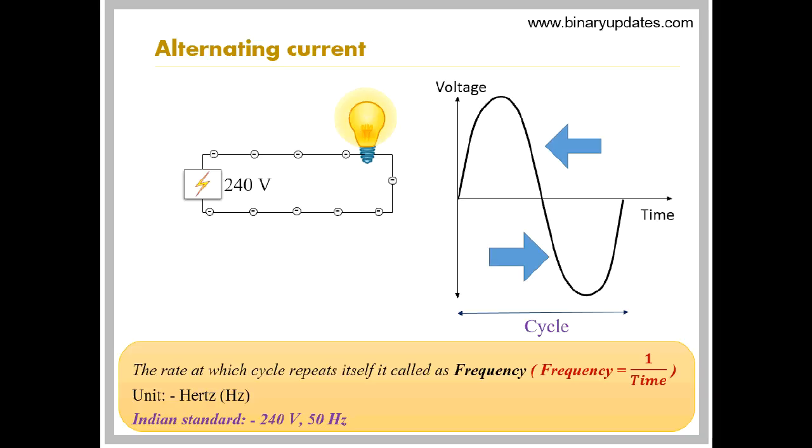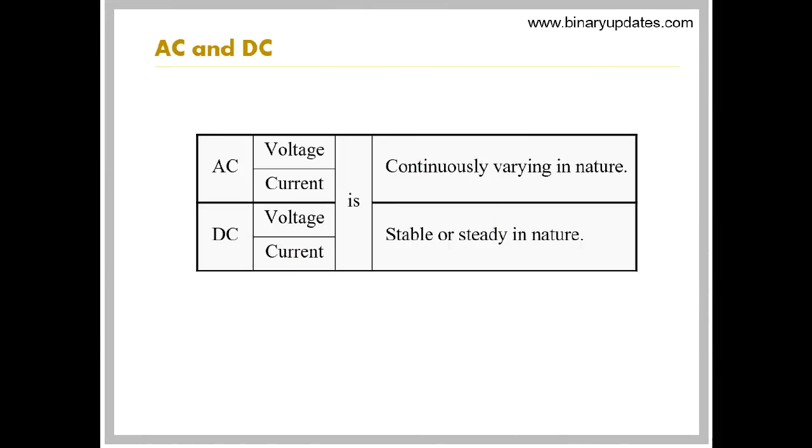Considering example of light bulb powered by AC source, 50 Hertz means change in brightness of light bulb occurs 50 times in a second, which cannot be detected by human eyes.